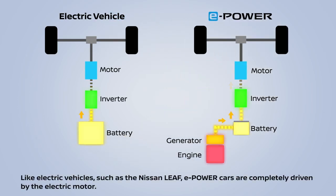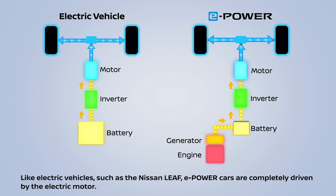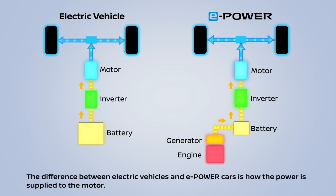Like electric vehicles, such as the Nissan Leaf, e-Power cars are completely driven by the electric motor. The difference between electric vehicles and e-Power cars is how the power is supplied to the motor.